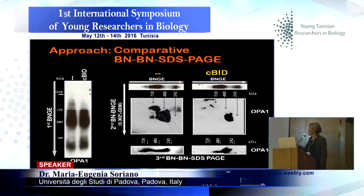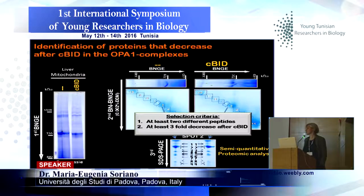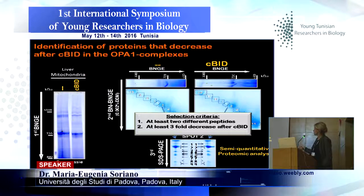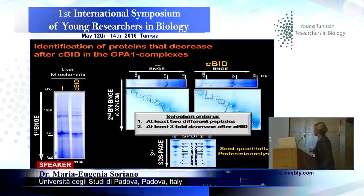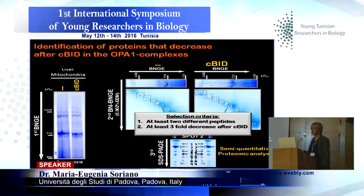This is how OPA1 looks in the first dimension — you can see a loss of these complexes after treatment with BID. We also lose the complexes in the second and third dimensions, meaning the approach is working. So, we compare in the third dimension spots at the same level between untreated and BID-treated samples. We have each spot for each part of the diagonal and analyze by mass spectrometry to obtain a semi-quantitative proteomic analysis.